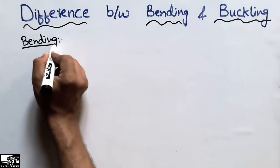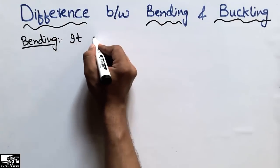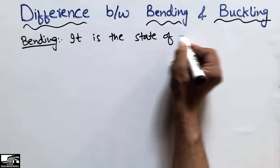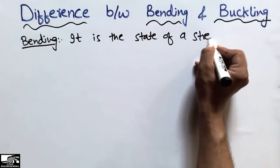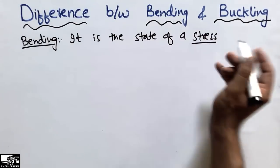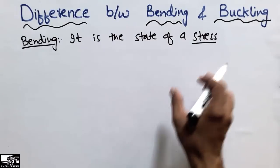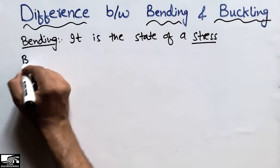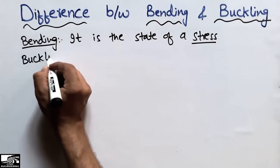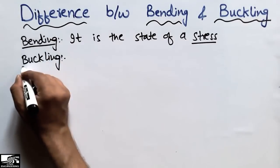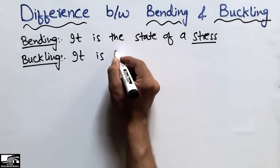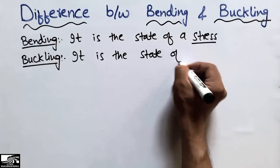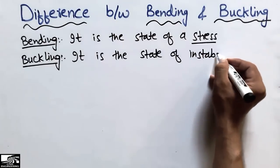First of all, to define bending: bending can be defined as the state of stress — when stress occurs in a member, we say that bending will be there in this member. While buckling can be defined as the state of instability.